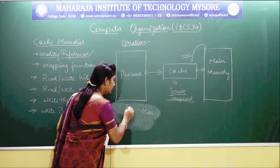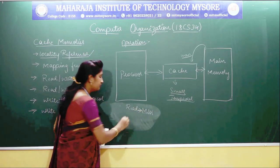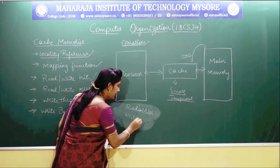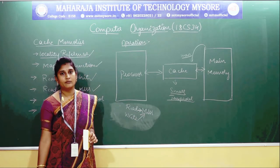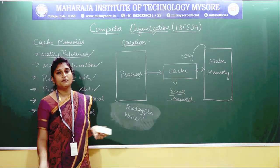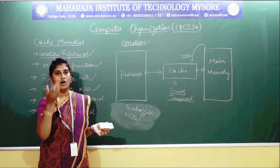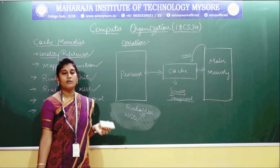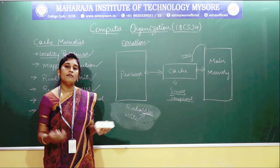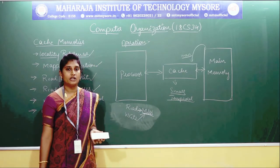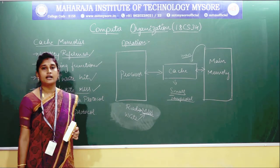If the operation is for read, you will be calling it a read miss. If the operation is for write, you will be calling it a write miss. You have requested to perform a particular operation but have not found that data or that particular memory location. So you are missing your operation — you have failed to execute that operation. That is called read or write miss.